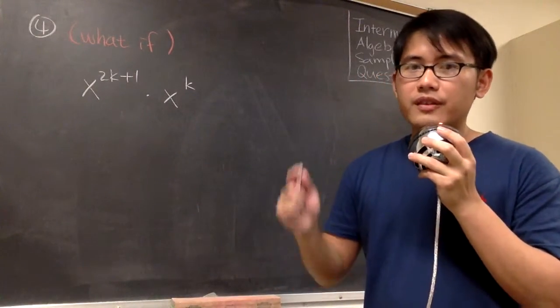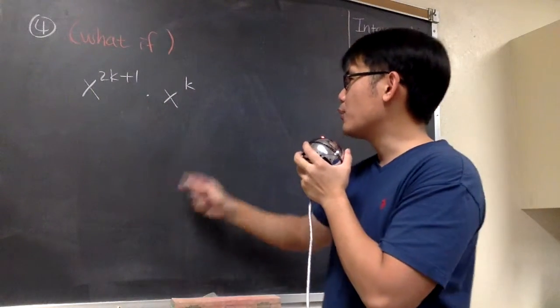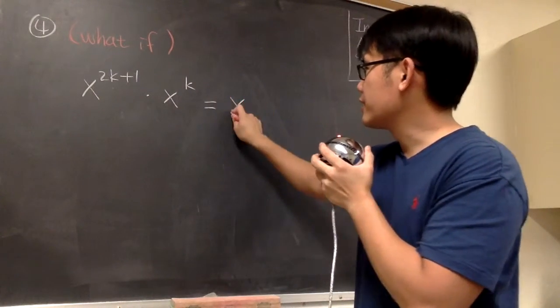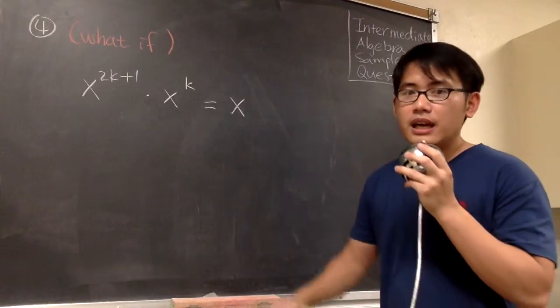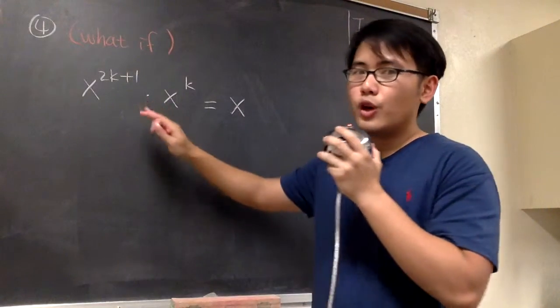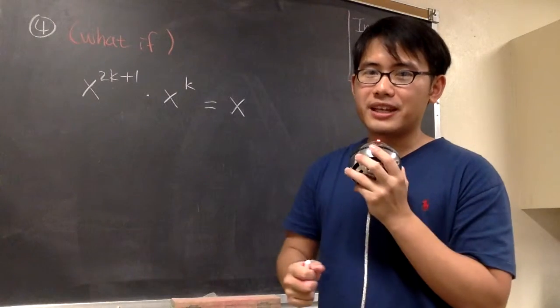And then we have to remember, the base will stay the same when we are trying to work out the new power. So let's just write down the x first. And then in the multiplication situation, what we do with the power is that we are going to add the powers up together.